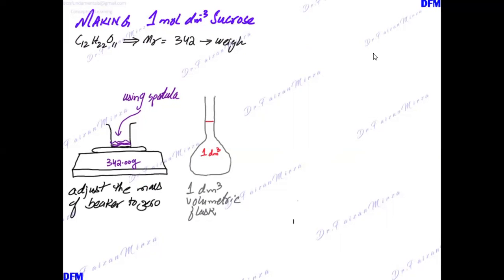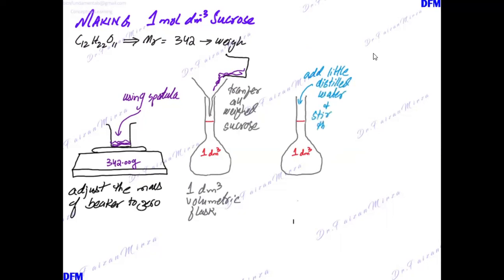Whenever we are making solutions, we use a volumetric flask. What you do is take a funnel and pour all the weighed sucrose into it. Once the solute is added, you will start to add a little distilled water and stir it thoroughly to get a good mix—not gently, but thoroughly.